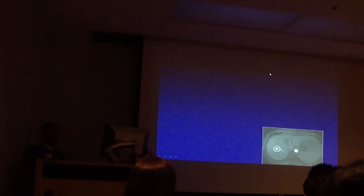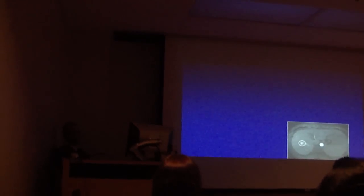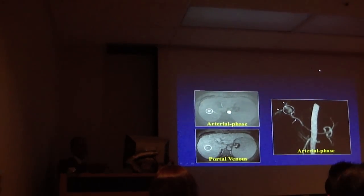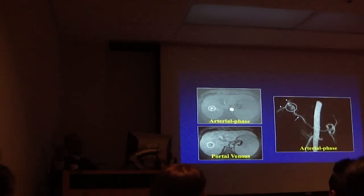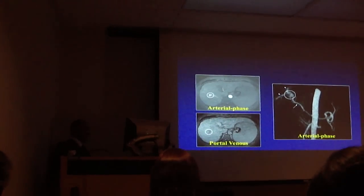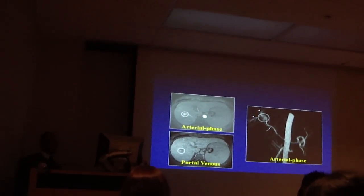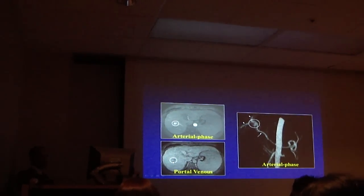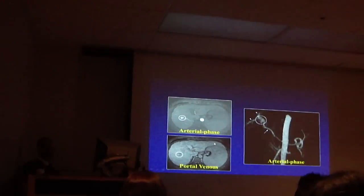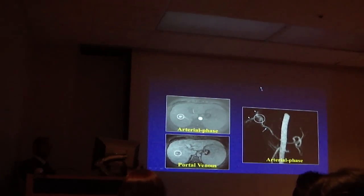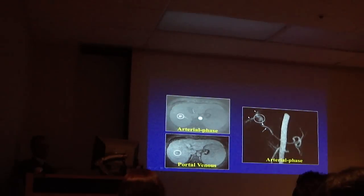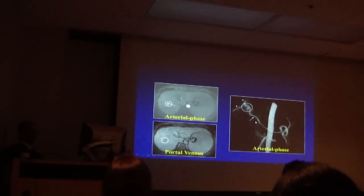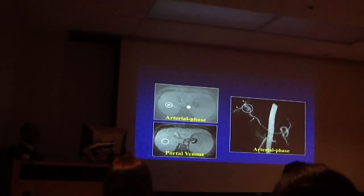Next lesion — bad or good? It's ill-circumscribed. Does it wash out? No. The liver is cirrhotic. A branch of the hepatic artery and portal vein filling — this is an arteriovenous fistula. The previous one was a veno-venous fistula. This is an arteriovenous fistula. They are all hyper-enhancing but none of them demonstrate washout. What are the two things to remember after this lecture? Margin and washout.